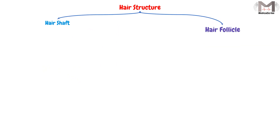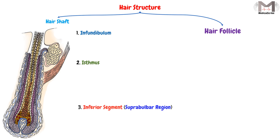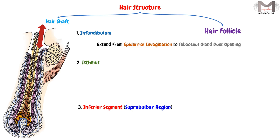The hair follicle, which is the second major part, comes from three main regions: the infundibulum, the isthmus, and the inferior segment or suprapulbar region. The infundibulum extends from the epidermal invagination — the point where the hair enters the epidermis — down to the level of the sebaceous gland duct opening.